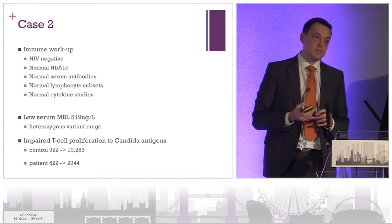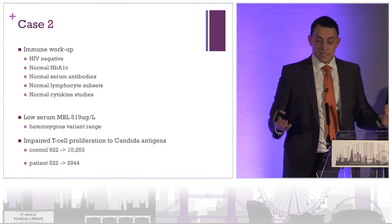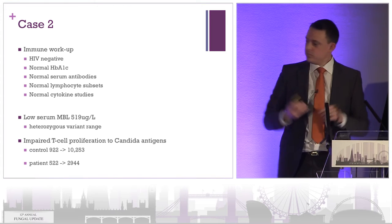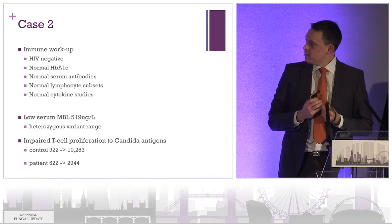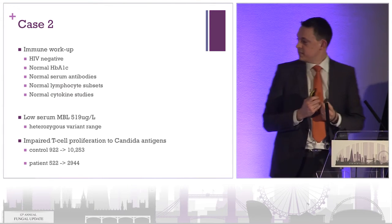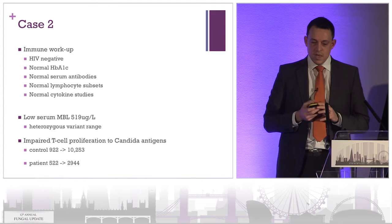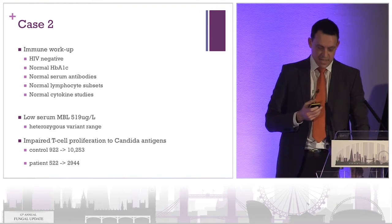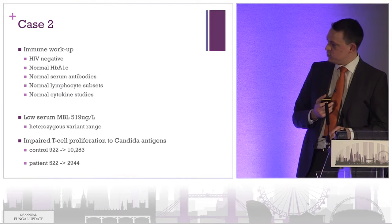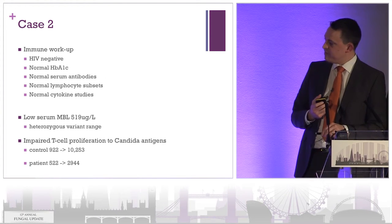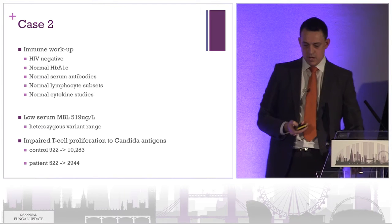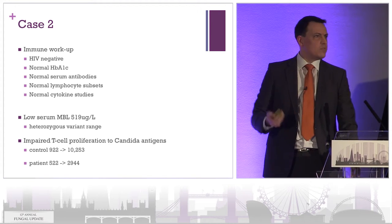In terms of her immune workup: she was HIV negative, not diabetic, had normal antibody levels in her serum, normal lymphocyte subsets, and normal cytokine studies looking at type 1 immune signalling. She had a moderately low serum mannose-binding lectin level — probably doesn't mean very much in this case. But she did initially have impaired T-cell proliferation to candidal antigens, sent to Great Ormond Street. The control showed tenfold multiplication, but in her case only a fourfold change — a suggestion that something is going on.